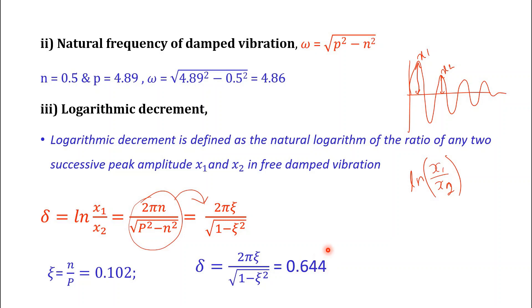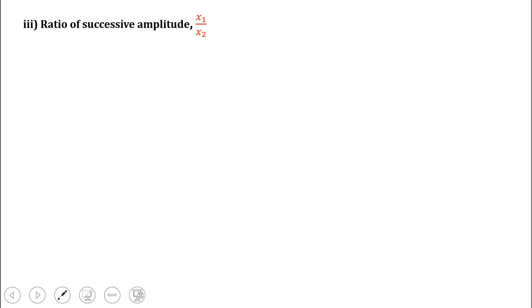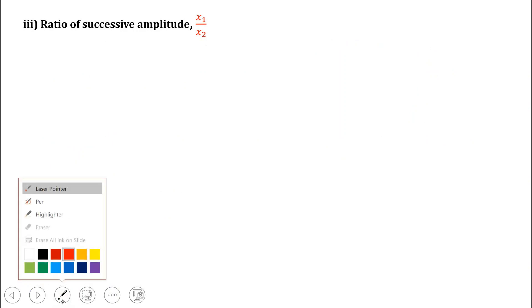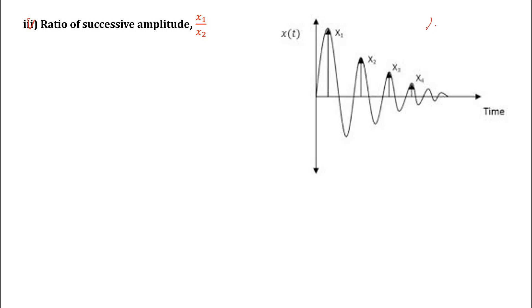For the ratio of successive amplitudes: we found ln(x₁/x₂) = 0.644, so x₁/x₂ = e^0.644 ≈ 1.904. This is the ratio of successive amplitudes.